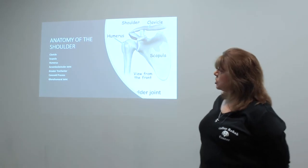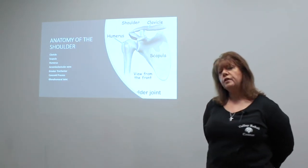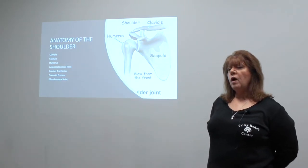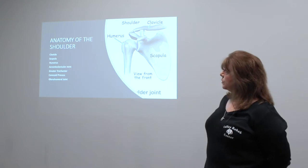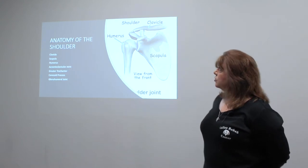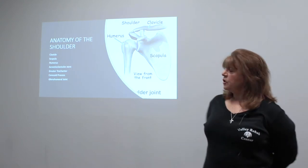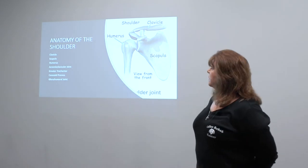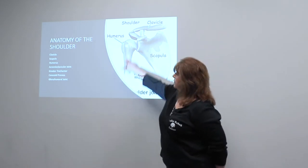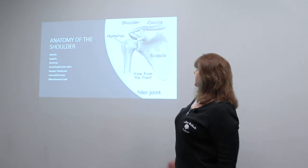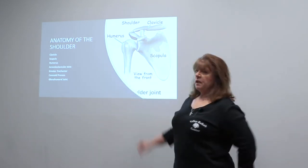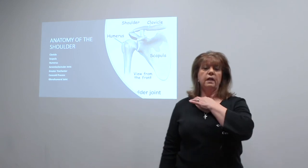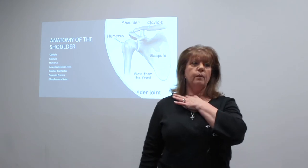This is just a little bit of anatomy of the shoulder so that you can understand how an impingement syndrome works. This is your shoulder, looking straightforward, like you're looking at me. This is your humerus, or the arm bone; the scapula, or your shoulder blade; and the clavicle here, which is your collarbone.